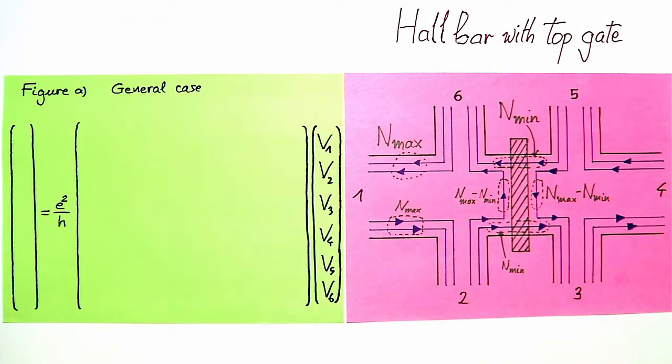We will now describe a generalized case of the situation shown in figure A, which is drawn again here, with the top gate in the middle selectively reflecting innermost edge channels.